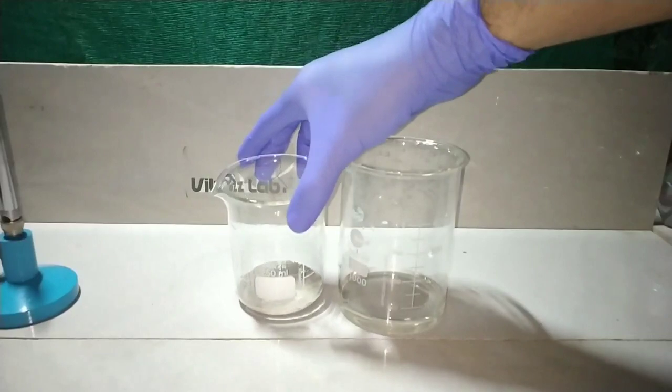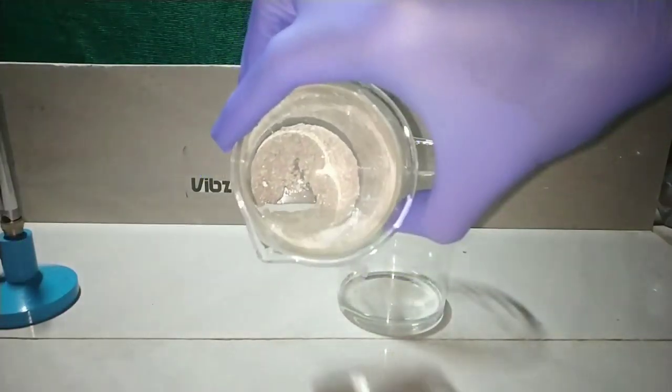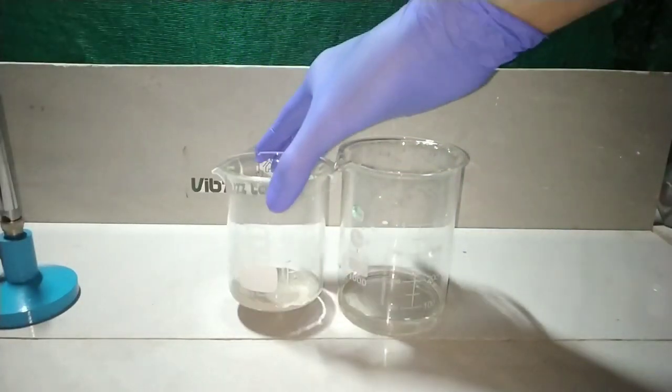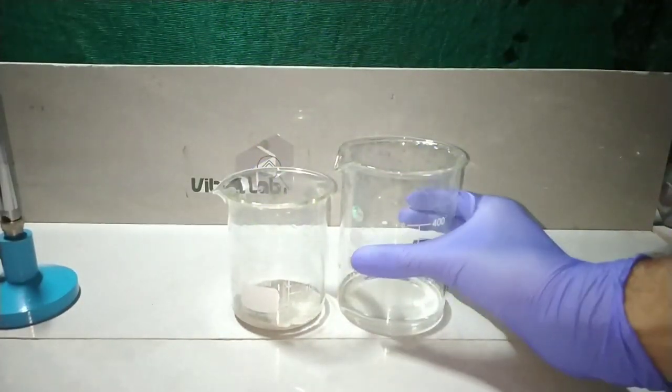And now you can see the metal is almost pure now. So into that I am adding about 40 ml of 68% nitric acid.